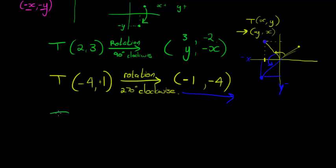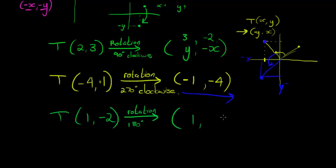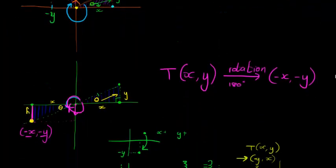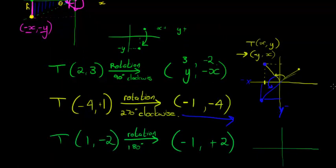For the last example, take (1, −2) rotated 180 degrees. Both coordinates stay the same values but both signs change: positive 1 becomes negative 1, negative 2 becomes positive 2, giving (−1, 2). If you forget the rules, just plot the point and do it physically — it won't take long. Rotations are actually very simple. In the next lesson we'll look at rotations that aren't multiples of 90 degrees, which is slightly more complicated.